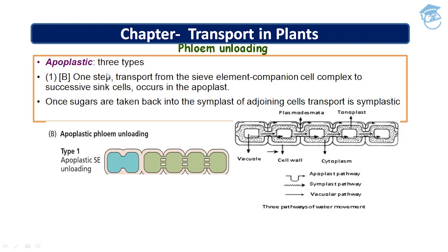For apoplastic phloem unloading, there are three types. The first involves transport from the sieve element-companion cell complex to successive sink cells occurring in the apoplast; once sugar is taken back into the symplast of the adjoining cell, transport becomes symplastic. The arrow represents the vesicular or transmembrane pathway; the zigzag arrow represents the symplastic pathway; and the straight arrow represents the apoplastic pathway — which involves movement through the plant cell wall.